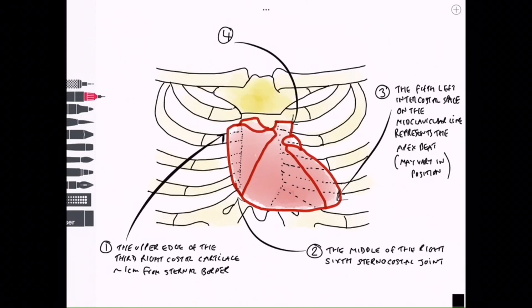The fourth position here is about 1.2 centimeters from the sternal edge, and this fourth position is the lower margin of the second costal cartilage.